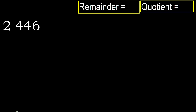446 divided by 2. 4 is not less, therefore with 4: 2 multiplied by which number is nearest to 4 but not greater? 2 multiplied by 3 is 6, which is greater. 2 multiplied by 2 is 4, which is not greater. 4 minus 4 is 0.